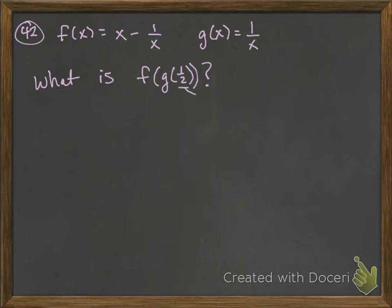So what we're going to do is plug this 1 half in for x at the function g. So what does that give us? That gives us 1 over 1 half. If you do 1 divided by 1 half, that's like saying 1 over 1 times 2 over 1, which is going to give us 2.